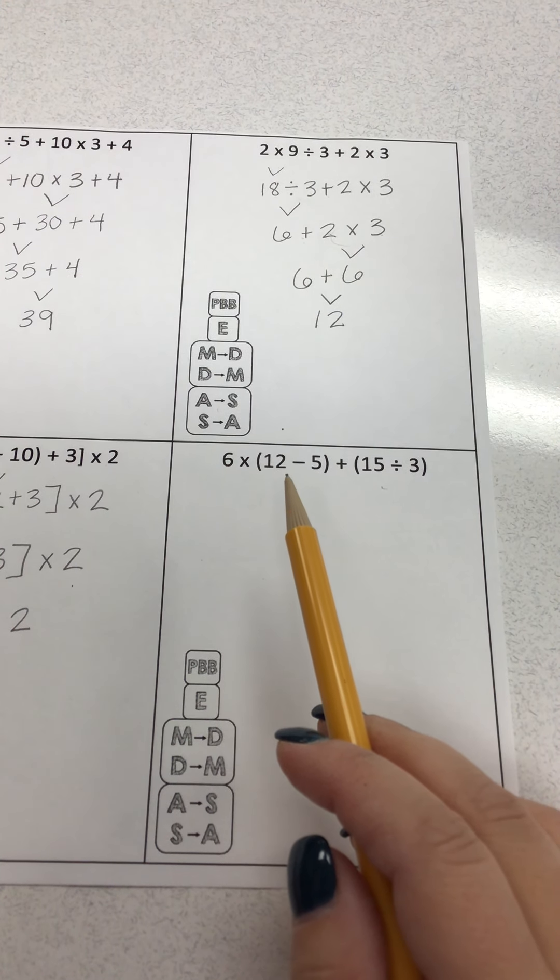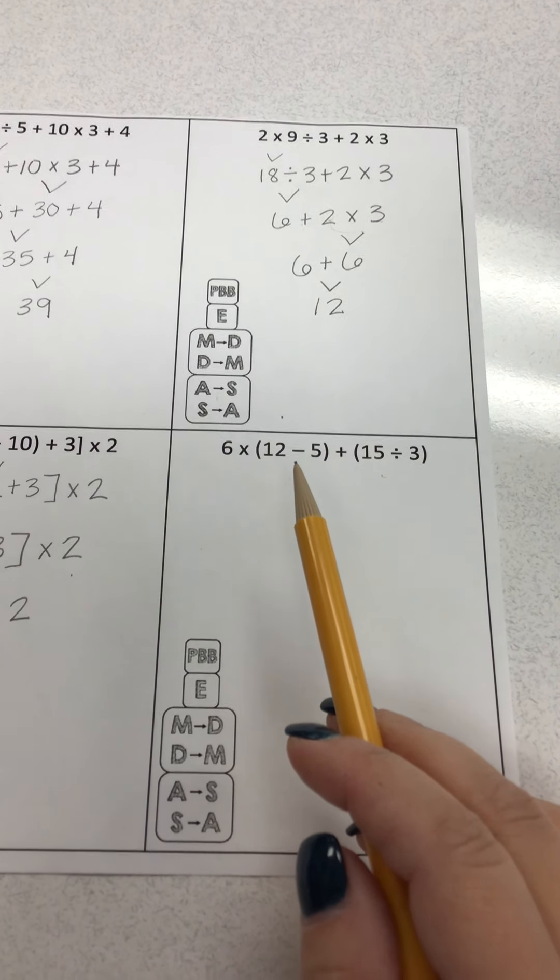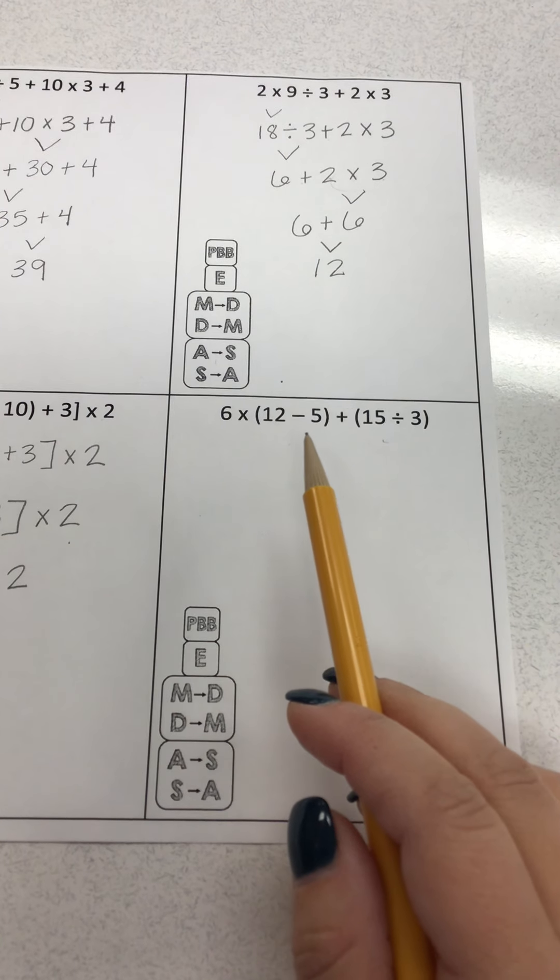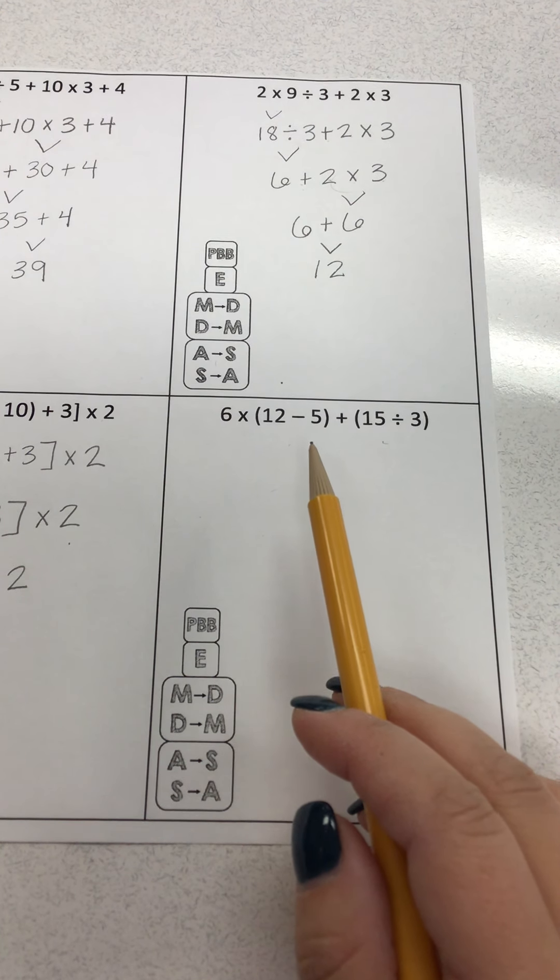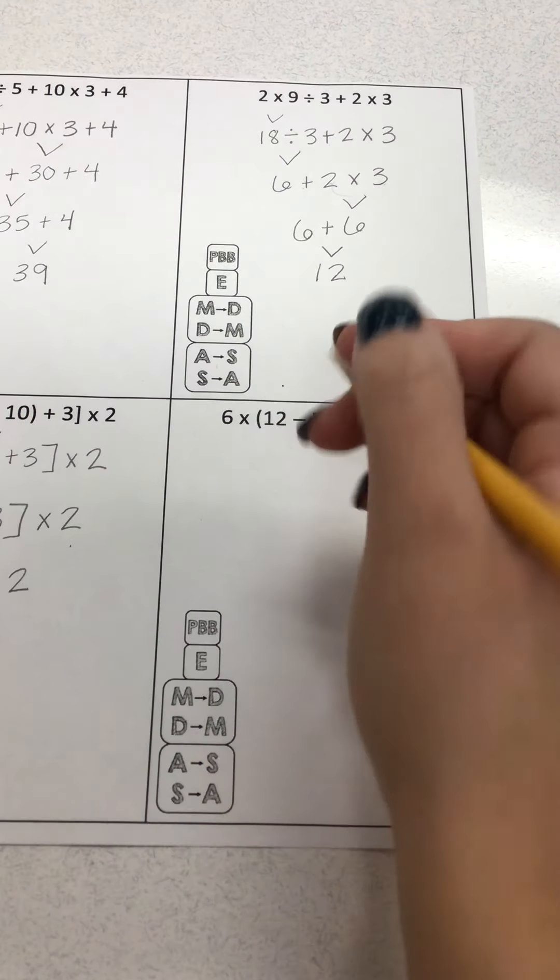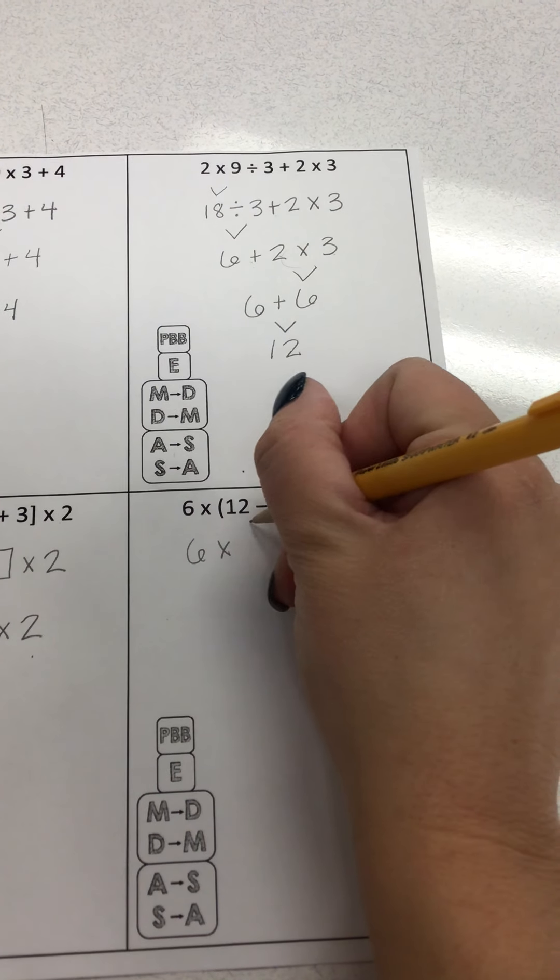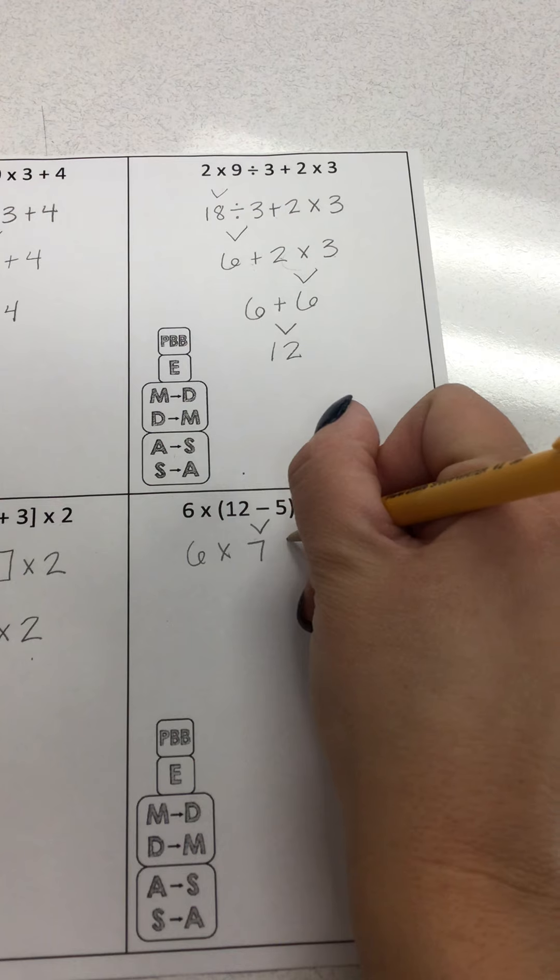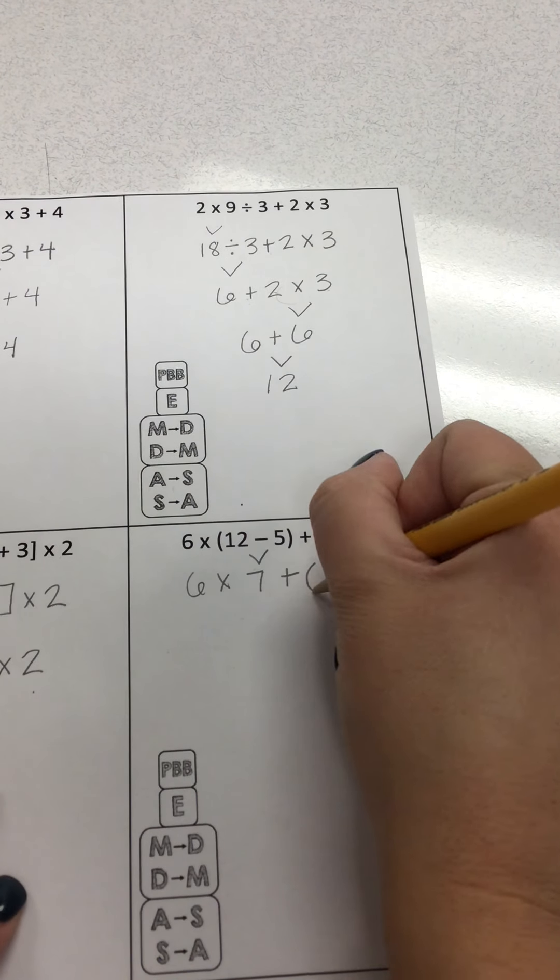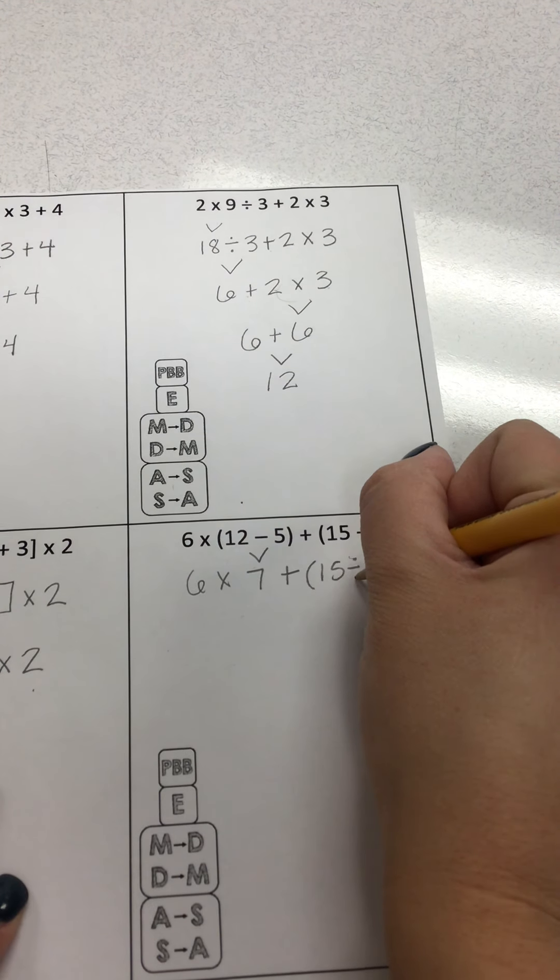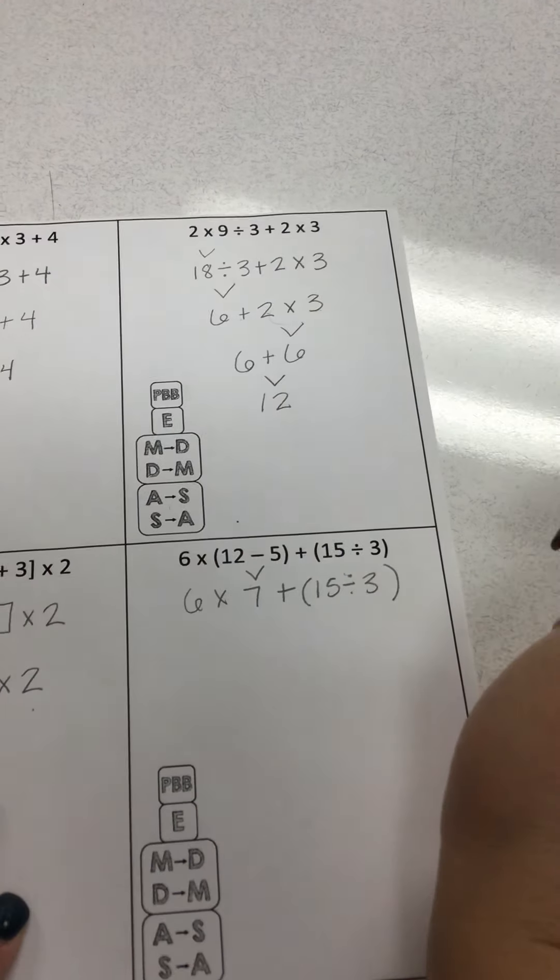So 12 minus 5 is 7. So I have 6 times 7 plus and I still have this in parentheses.